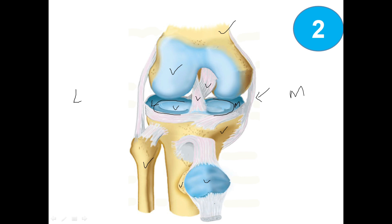Laterally, this one is the lateral collateral ligament, also known as the fibular collateral ligament. This one is the patellar ligament and this is the tendon of the quadriceps femoris muscle.